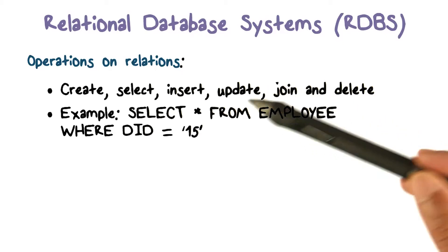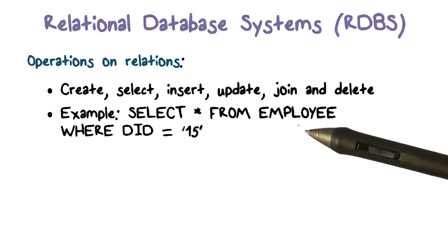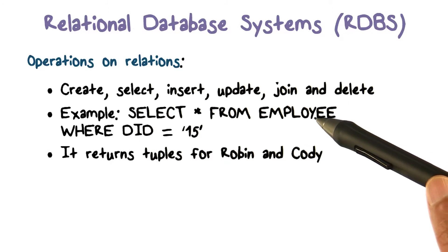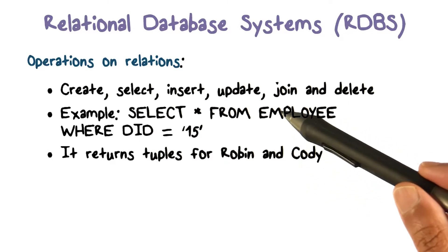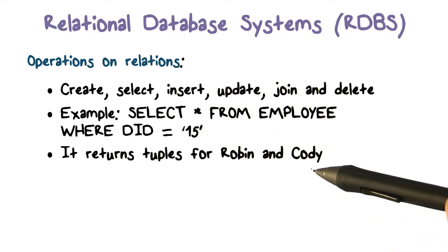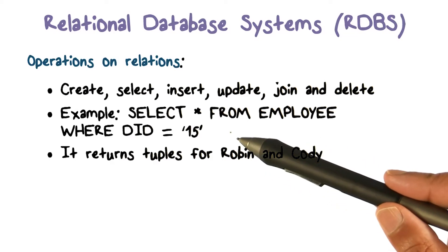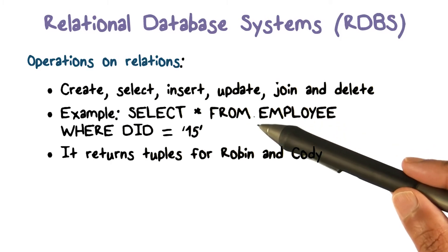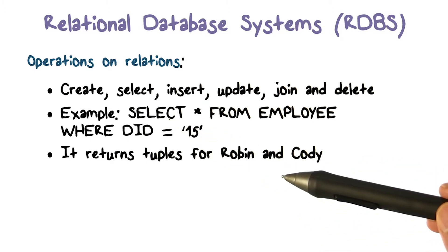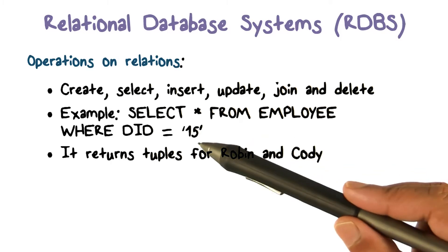This is an example of a read query, because all we're doing is reading selected pieces of information from that table and returning it to whoever is making the request. If you run this query against the table we just saw, the department ID is 15 for two employees — Robin and Cody. So we get the tuples for Robin and Cody in response. Selection has happened because we had more employees, but now we're only selecting the ones who work in department ID 15.